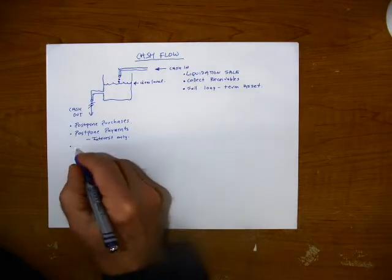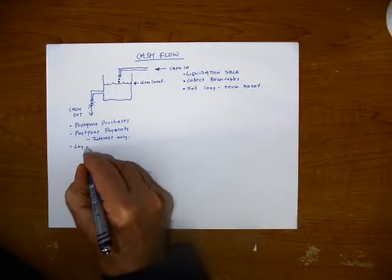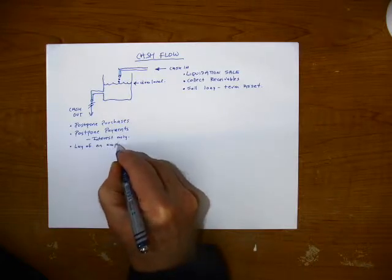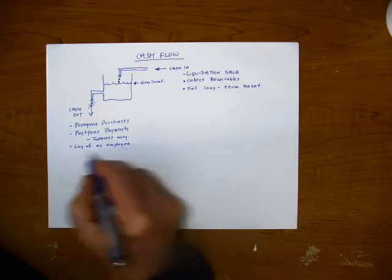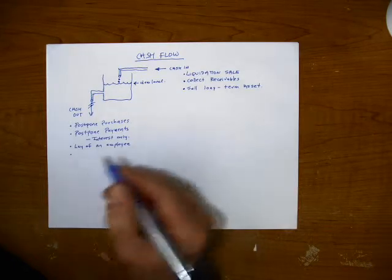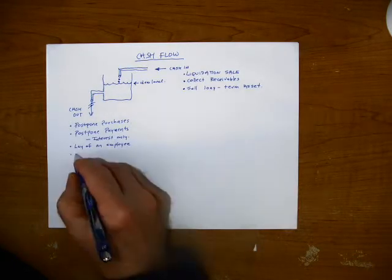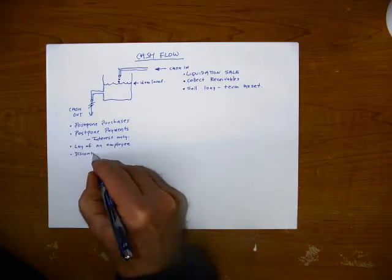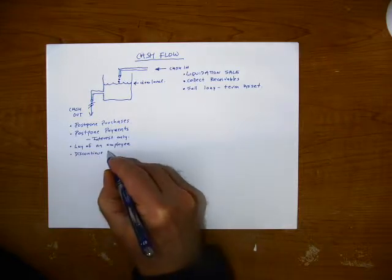Another thing we could do is, and it's a little drastic, but we could lay off an employee. And then finally, another one to restrict the flow of cash would be to discontinue paying a dividend.